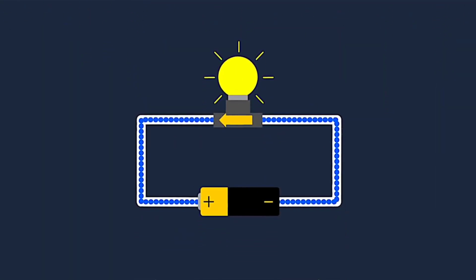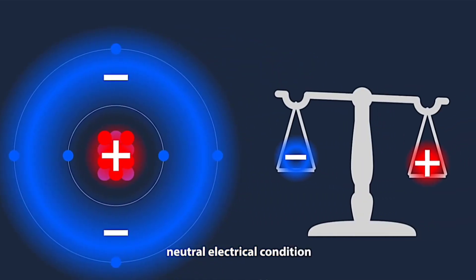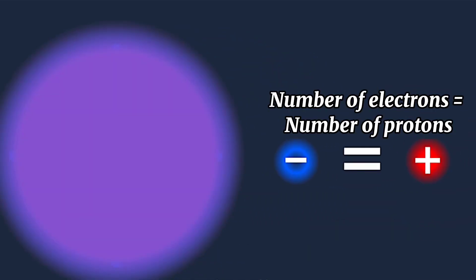However, in a stable state, the number of protons in the atom is equal to the number of electrons, and the positive charges of protons are balanced with the negative charges of electrons.